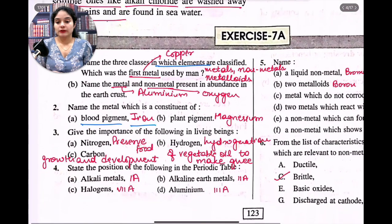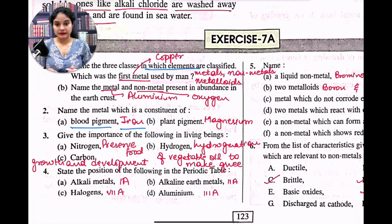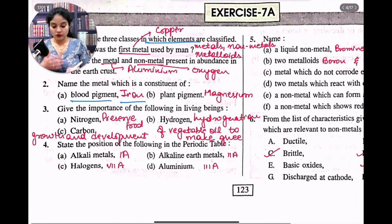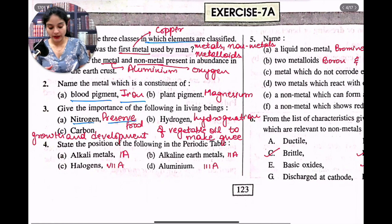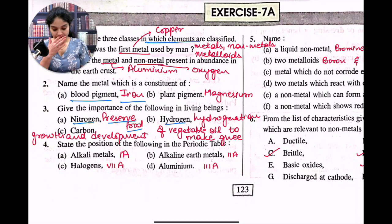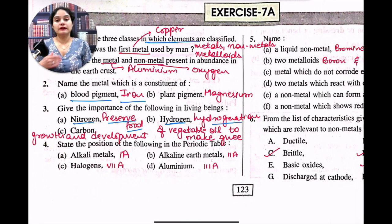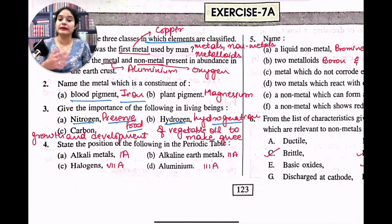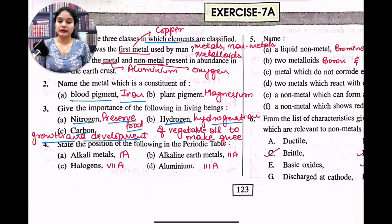Question number three: give the importance of the following in living beings. Nitrogen is required to help preserve food. Hydrogen is used in hydrogenation — when we treat vegetable oil to increase its shelf life, that is called hydrogenation, because we add hydrogen to it so that it becomes a more stable compound. Then carbon is very important for the growth and development of living beings because our body cells depend on carbon.